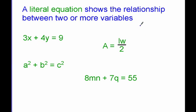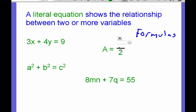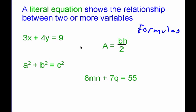In previous math classes, you've probably talked about a lot of formulas. For example, this is the formula for the area of a triangle — that should say base times height over 2. This right here is the formula for the Pythagorean theorem: a squared plus b squared equals c squared. Formulas are just a type of literal equation, and you can use these literal equations to solve for one variable when you know the others. This down here, 8mn plus 7q equals 55, is just another literal equation.